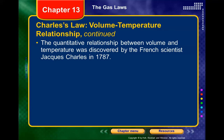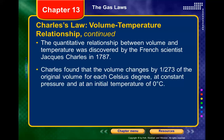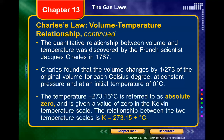Jacques Charles discovered this in 1787, and that's why the law is named after him. He found that volume changes by 1/270th of the original volume for each degree Celsius at constant pressure. Starting from zero degrees Celsius, this is how scientists arrived at negative 273°C for absolute zero and created the Kelvin scale for gas properties.